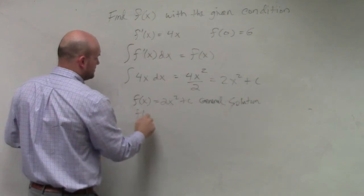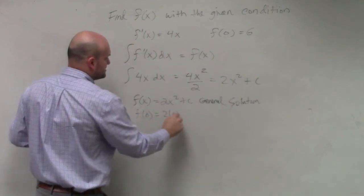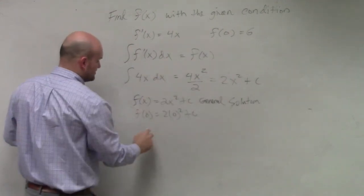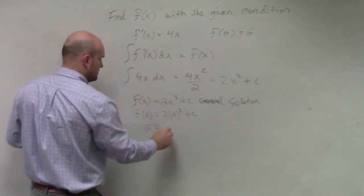So, if I do f of 0 equals 2 times 0 squared plus c, and then I set f of 0, which is equal to 6, equals to c.